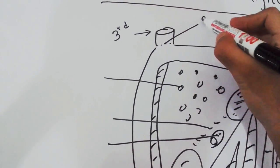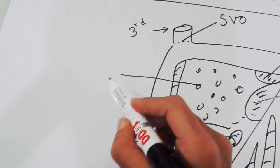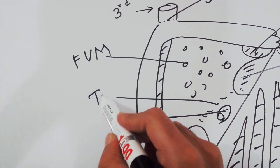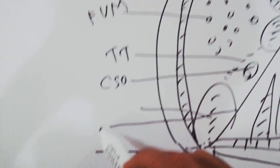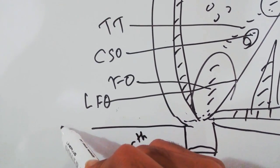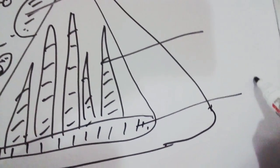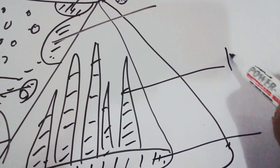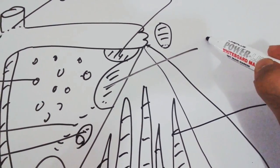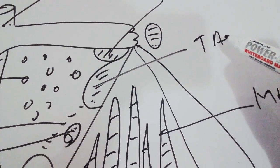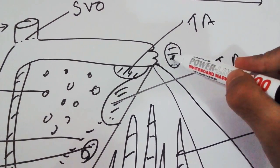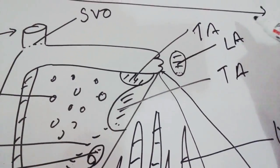Labeling the structures again: this is the superior vena cava opening, foramina venarum minimarum, tendon of Todaro, coronary sinus opening, fossa ovalis, limbus fossa ovalis, inferior vena cava opening, crista terminalis, musculi pectinati, tricuspid annulus, torus aorticus, and left auricle.